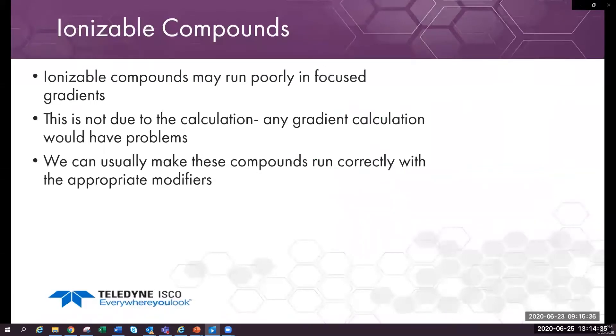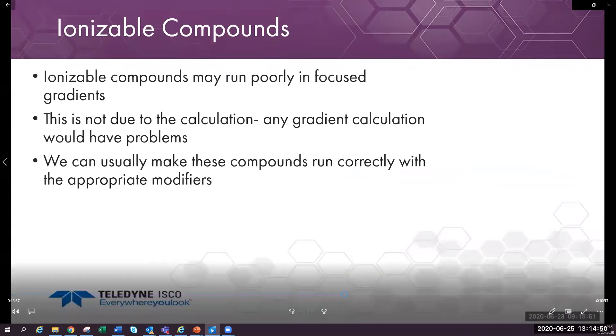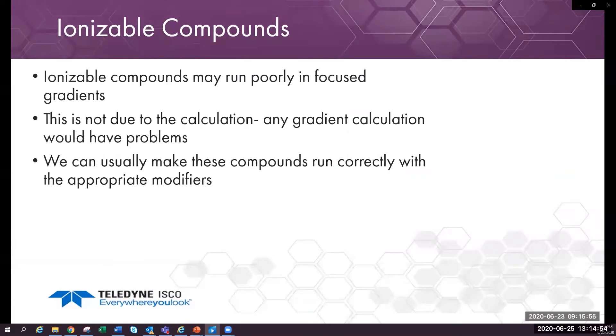Many times the compounds such as acids or bases elute at a time other than the calibrated six minutes. Most of the time the elution works fine and this is one reason that we use a focused gradient. Sometimes they elute at a very different time. Any of the methods described earlier may show unexpected elution with ionizable compounds.